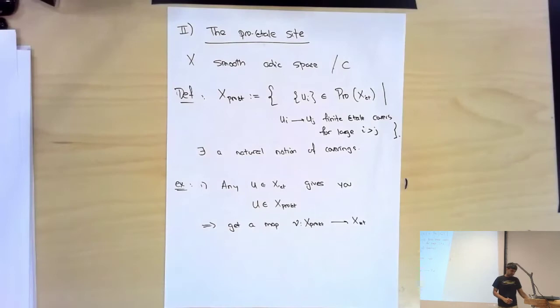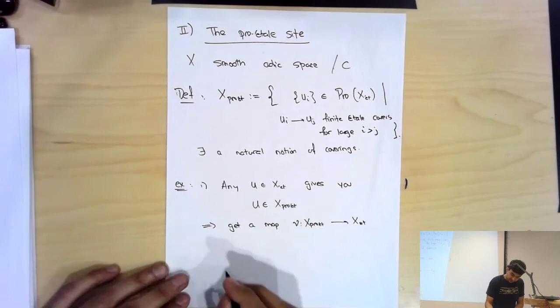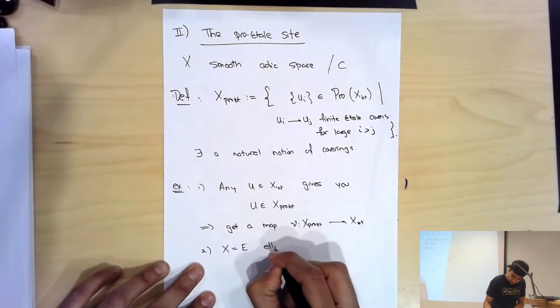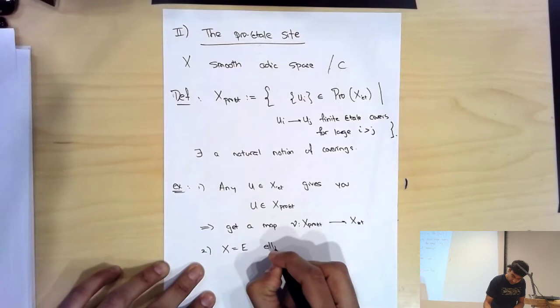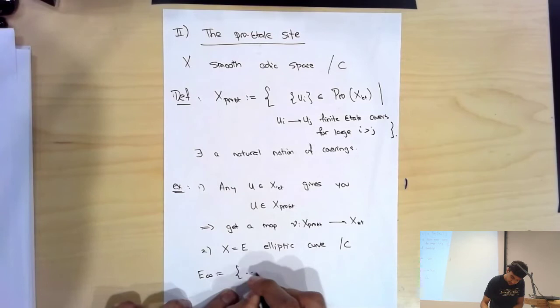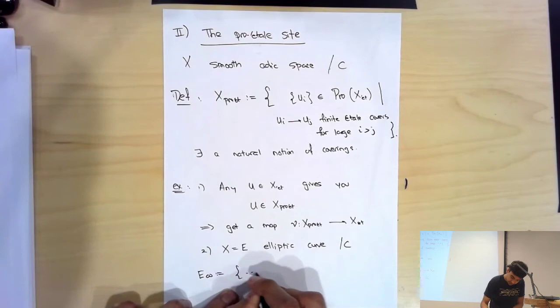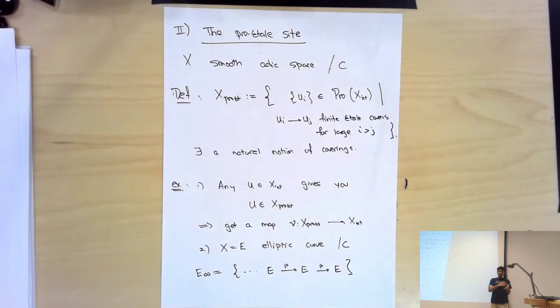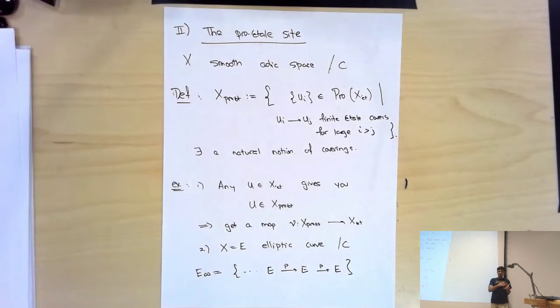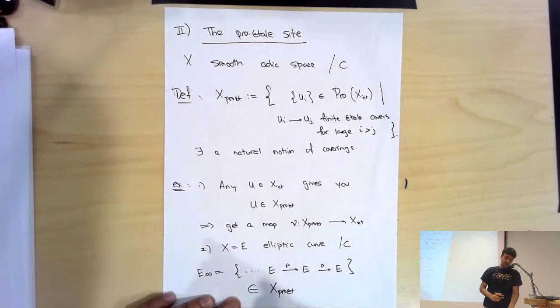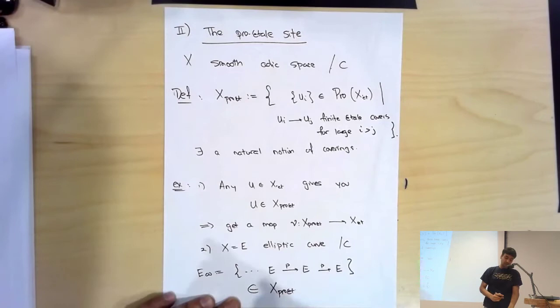The second example is from my talk yesterday. If X is an elliptic curve, then we had this tower E_∞ — the tower of multiplication-by-p maps. Multiplication by p on an elliptic curve over a field of characteristic zero is a finite étale map. So this is a tower of finite étale covers of E, and it defines an object of the pro-étale site. This is the kind of object we're interested in: a base object like E and then a huge tower of finite étale covers.